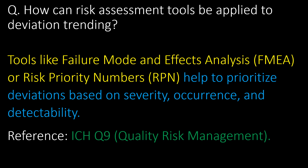How can risk assessment tools be applied to deviation trending? Tools like Failure Mode and Effects Analysis (FMEA) and Risk Priority Numbers (RPN) help to prioritize deviations based on severity, occurrence, and detectability. Reference: ICH Q9.